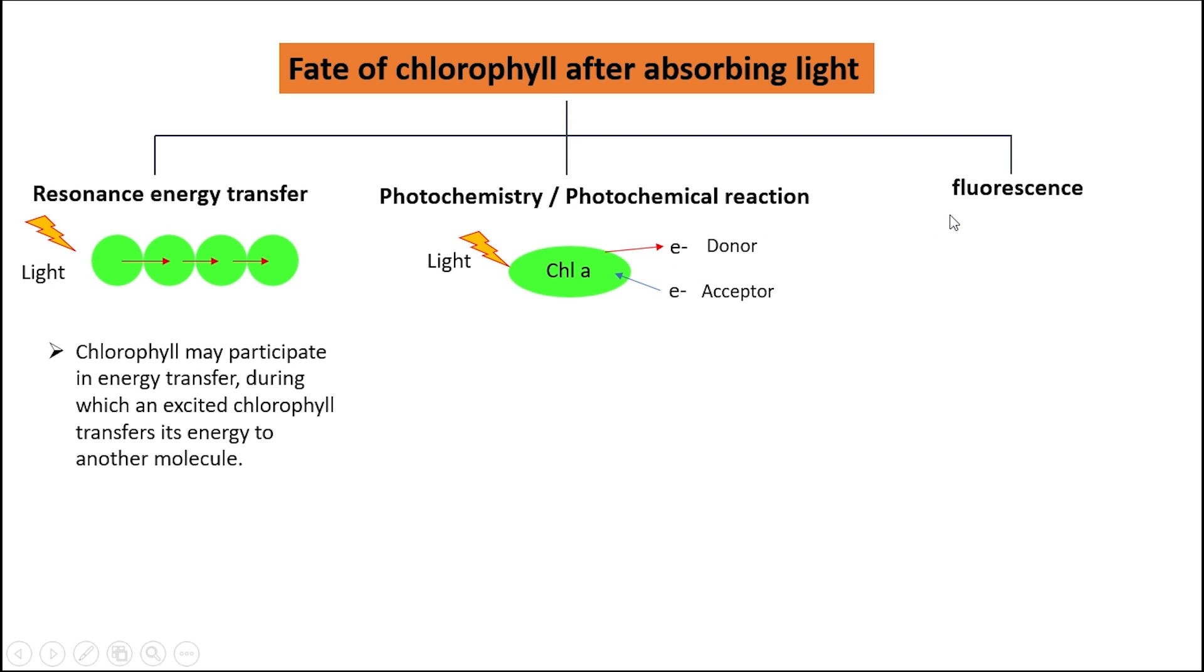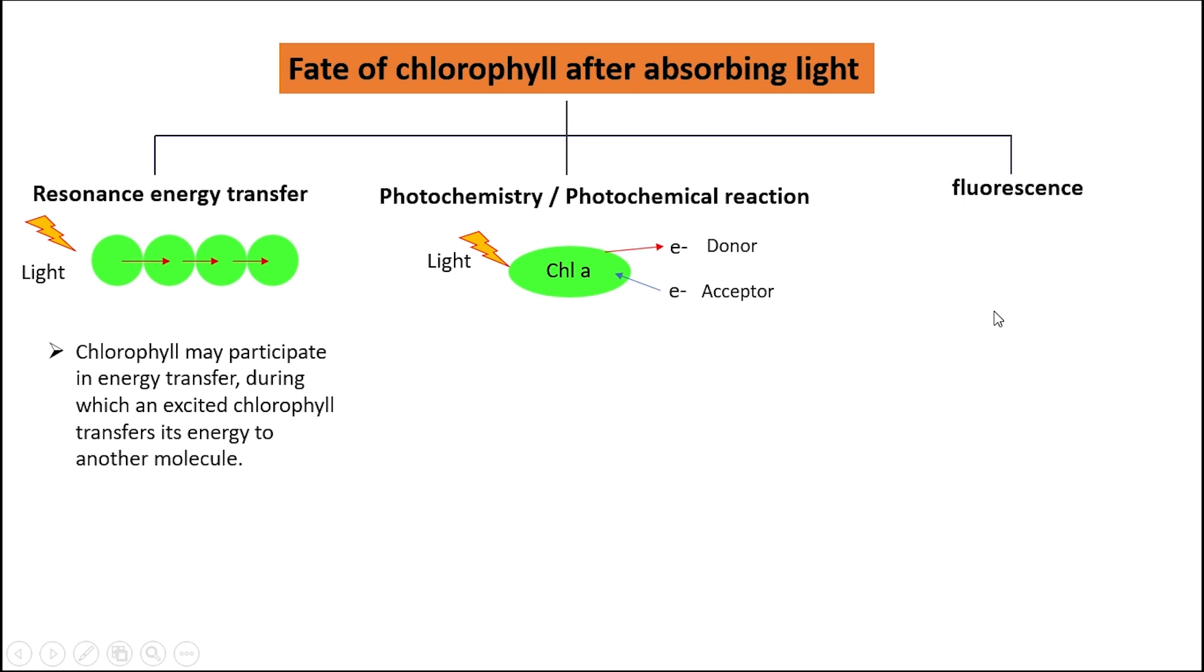Third, it can show fluorescence. In this process, excited chlorophyll can lose energy by emission of light of longer wavelength. This process is known as fluorescence.